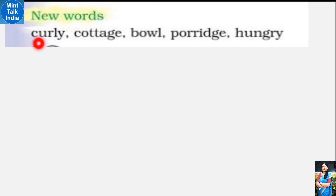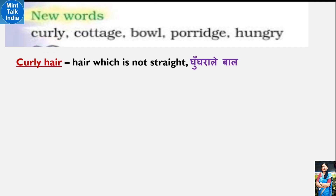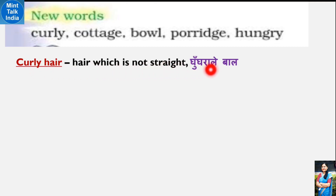First word is 'curly' - C-U-R-L-Y. Curly hair matlab the hair which is not straight - ghungrale baal. Uske baad hai 'cottage' - C-O-T-T-A-G-E. Cottage matlab a small house, kutia.